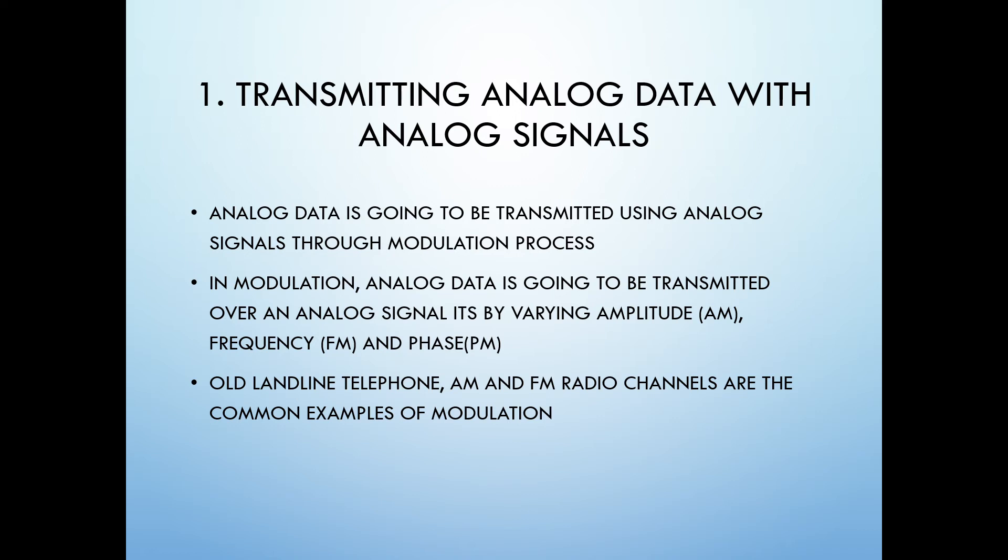In modulation, analog data is going to be transmitted over an analog signal by varying amplitude, frequency, and phase. Old landline telephones, AM and FM radio stations are the most common examples of analog data to analog signal conversion.